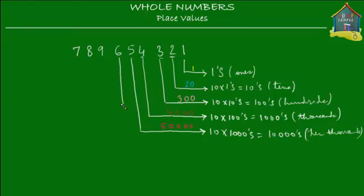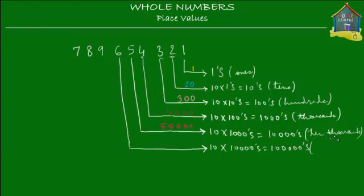Similarly, for 6 — 6 is one place to the left of the 10,000's place, so it's 10 times higher than 10,000, which means it's in the 100,000's place. And 10 times 10 is 100, so this is the 100,000's place. The 6 is in the 100,000's place, and its value is therefore 600,000.